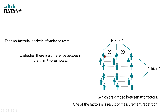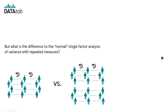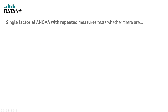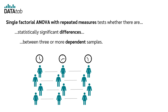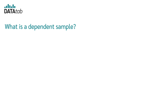So one factor results from a dependent sample. But what is the difference to the normal one-factor analysis of variance with repeated measures? The single-factorial ANOVA with repeated measures tests whether there are statistically significant differences between three or more dependent samples. But what is a dependent sample? In a dependent sample, the measured values are connected.